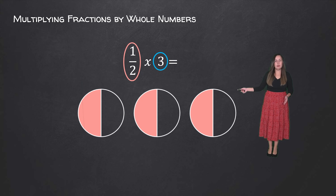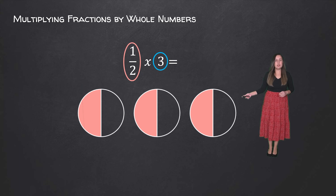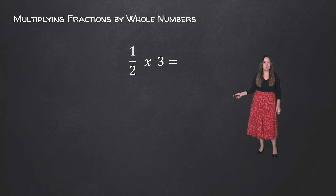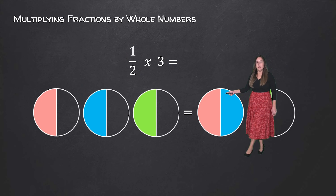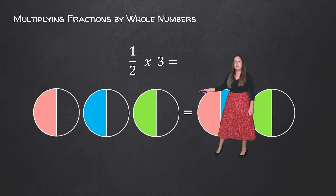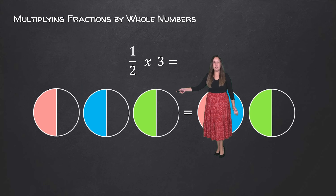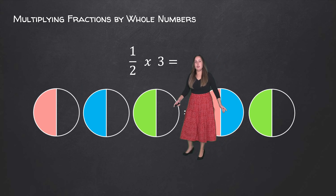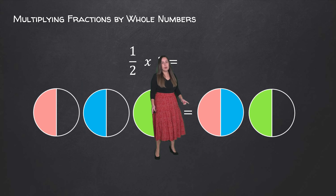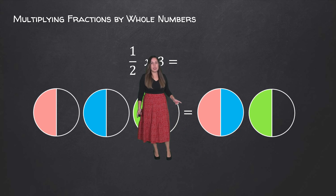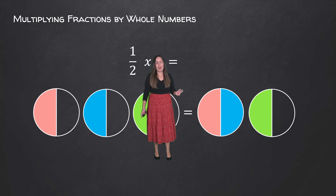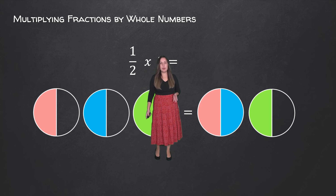So here we have 1 over 2 written out three times, which is the same thing as 1 over 2 times 3. If we take our original model and color coded, notice here that we are representing our three halves but putting them together.